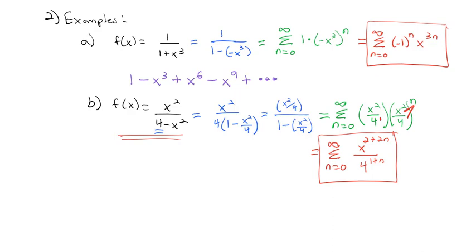So we looked at several things today: we defined a power series, we looked at when it converges by identifying the radius of convergence and the interval — it converges at the center, everywhere, or over a specific interval — and we used the ratio test to decide which case applies. Then we concluded by looking at why power series are important, converting known functions into power series using the geometric series. Later we'll look at other series not in geometric form that we can still convert. Take a look at the homework, practice a few of these, and we'll see you in class.